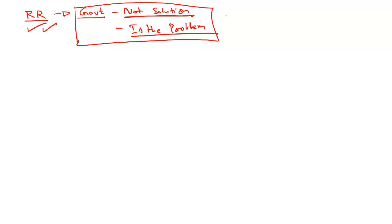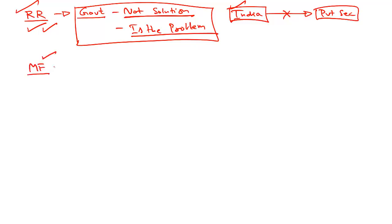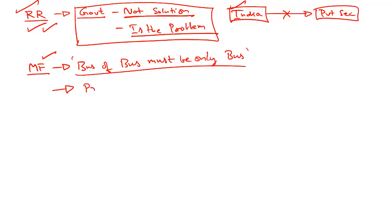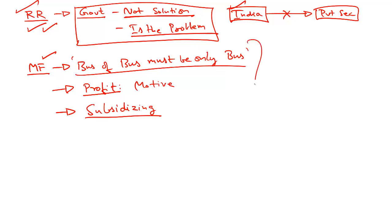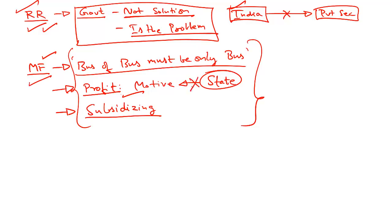Arun Maria feels this model may not be applicable or viable for India, because India cannot rely on the private sector to deliver basic services. He also references Milton Friedman, who said 'the business of business must be only business' — a private institution should be solely driven by the profit motive. If the burden of subsidizing services is shifted to the private sector, private institutions will fail because their profit motive is curbed; Friedman called this model a recipe for disaster.